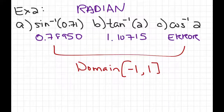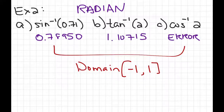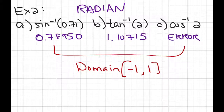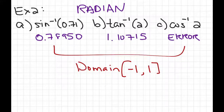Numbers outside the domain give you an error message. However, for tangent — when we talk about the graphs of these trig functions, you'll understand better why the domains and ranges are what they are — for now, I'll just tell you the domain for tangent is all real numbers.